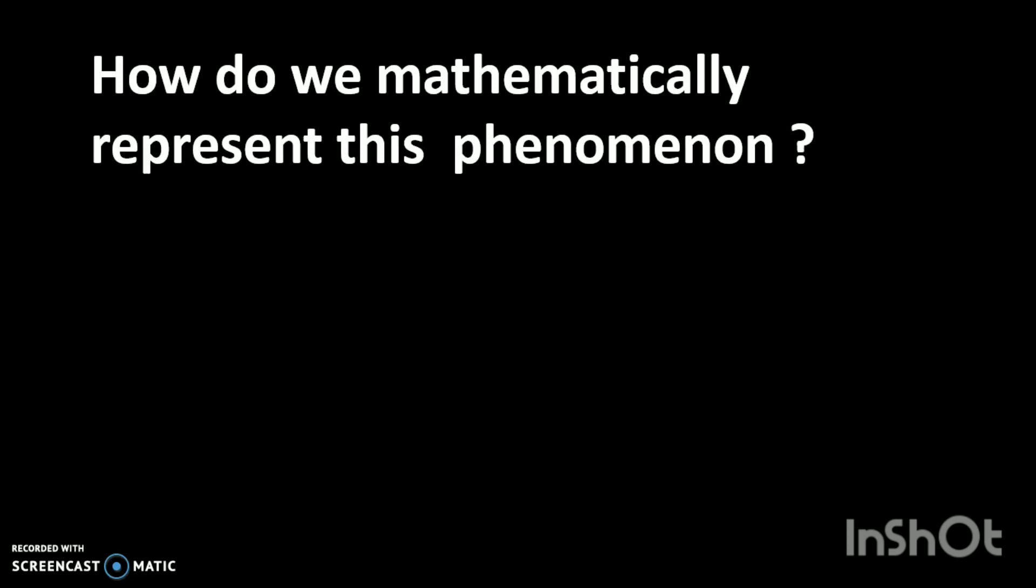So what will work for the quantum world? First, let's find a mathematical model for the randomness problem. It seems like before we make a measurement, the particle somehow holds the information on every possible outcome we would get. How do we mathematically represent this phenomenon?